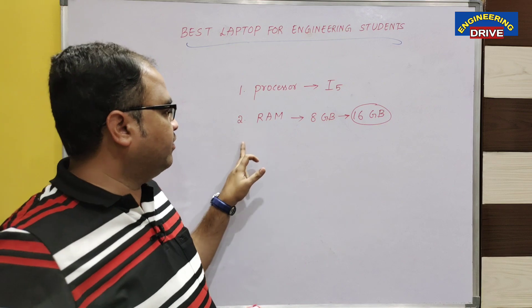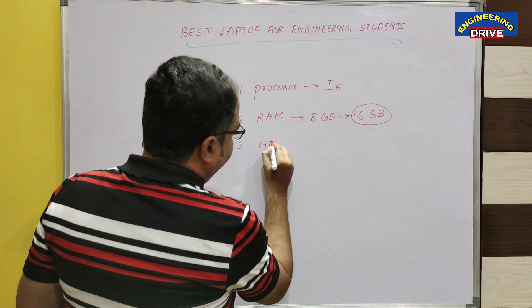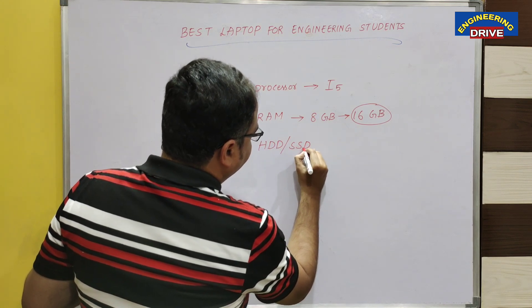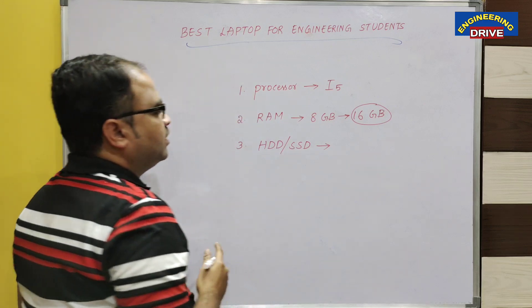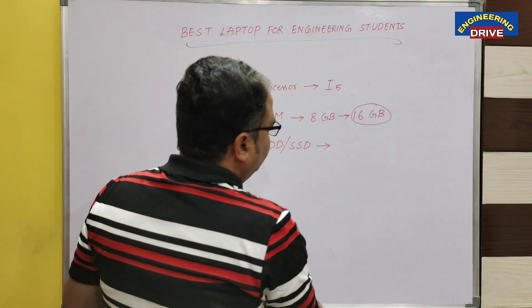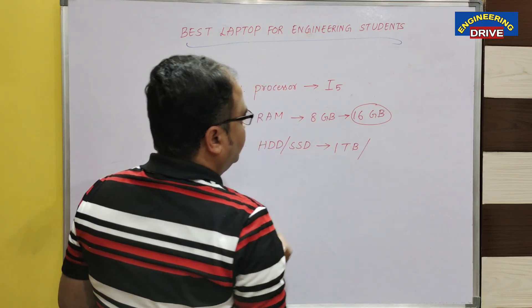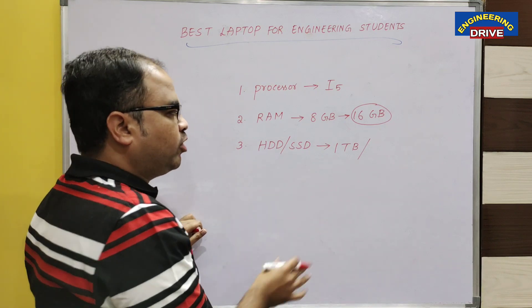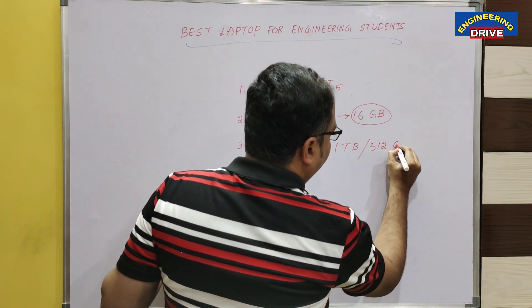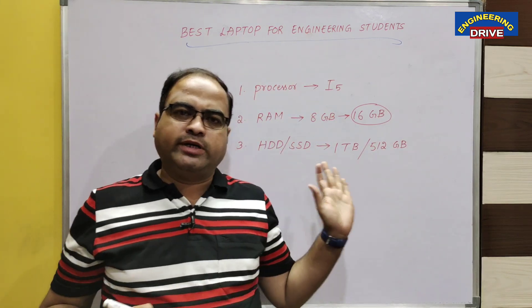The third thing I will specify is the hard disk drive or solid state drive capacity. In older laptops you used to get only HDD, so minimum capacity you need is one terabyte. If you are planning to purchase a laptop with SSD, then minimum go for 512 GB. This is the third important point.